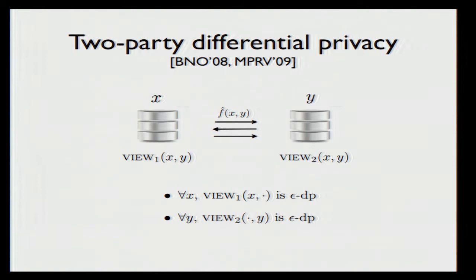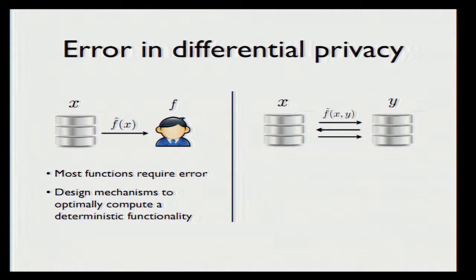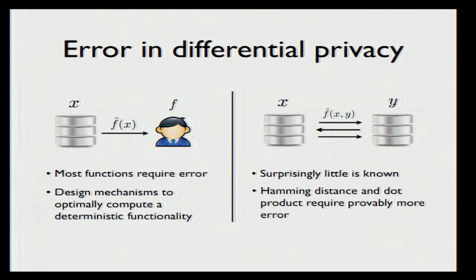We know by now that differential privacy comes at a cost, meaning that some error must be added to the output of the function in order to make it differentially private. Much of the research in this area is about designing differentially private mechanisms f-hat for functions f, typically considering deterministic functionalities in the client-server setting. The focus of this work is interactive protocols, and we want to understand how error behaves in this more complex setting — in particular, whether there is an accuracy gap as we go from the client-server setting to the interactive setting. Even though it's a very natural question, very little is known about it. In fact, for natural functionalities, the only two for which we can prove an accuracy gap is Hamming distance between two vectors and their inner product.